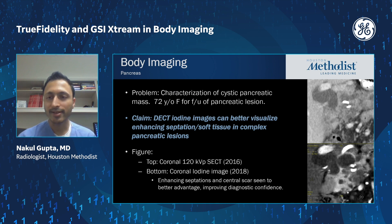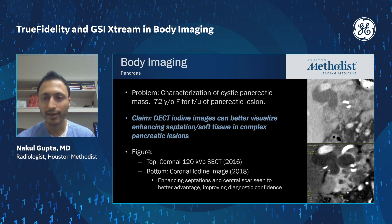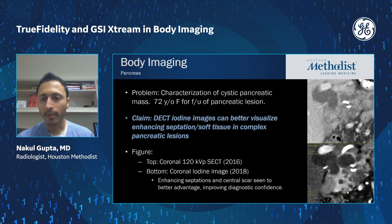The pancreas is another area where GSI can be tremendously helpful. This is a 72-year-old patient whose top image is a coronal magnified view of the pancreatic head from a prior single-energy study, showing a complex cystic lesion in the pancreatic head with a couple of calcifications and some septations that are hard to appreciate. Looking at the co-registered iodine map from the dual-energy study, you can see far more detail — the septations are much more clearly visible, as are the enhancing soft tissue elements.